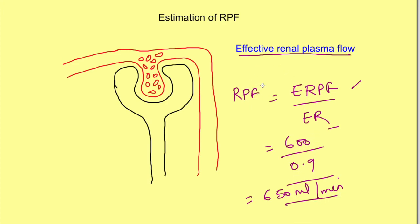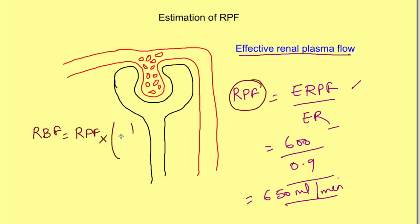From the value of renal plasma flow, we can determine renal blood flow if we know the hematocrit. The formula is: renal blood flow = renal plasma flow × (1 / (1 − hematocrit)). So by knowing renal plasma flow through PAH clearance, we can determine renal blood flow as well. Thanks for watching — if you liked the video, do like and share it, and subscribe to the channel Physiology Open.